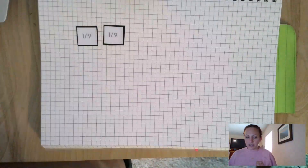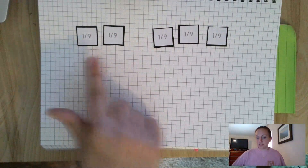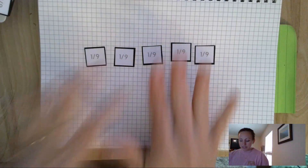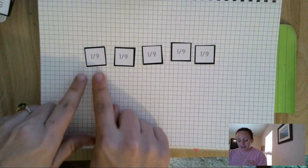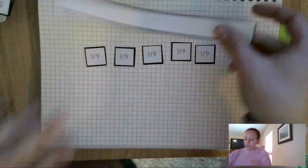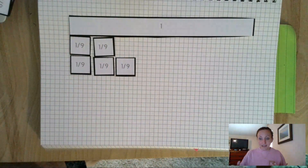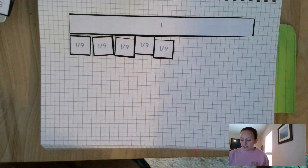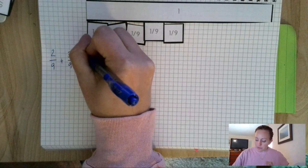Let's say I have 2 ninths, and I want to add that to 3 ninths — 2 ninths plus 3 ninths. I have 2 ninths here, I have 3 ninths here. I count them together, and now I have 5 ninths. So really I just did 2 plus 3, and then the 9 stayed the same. The 9 stays the same because the amount of pieces for one whole doesn't change just because I'm adding. If I have 2 ninths plus 3 ninths, it would still take me 9 ninths to make a whole. So I don't change my denominator — I just add together my numerators. 2 ninths plus 3 ninths equals 5 ninths.